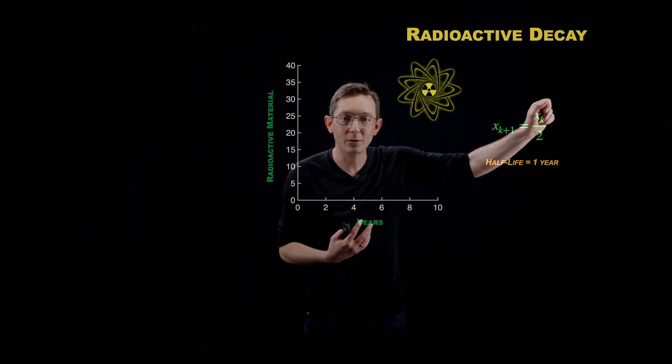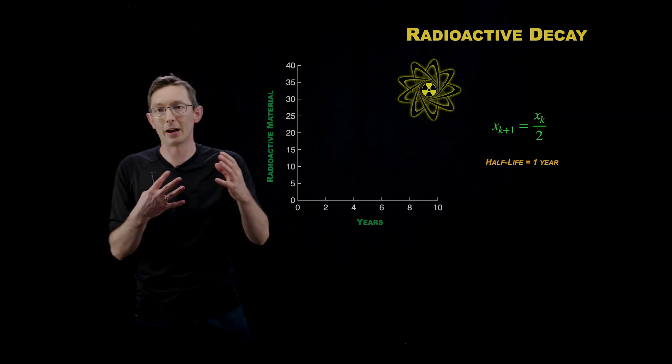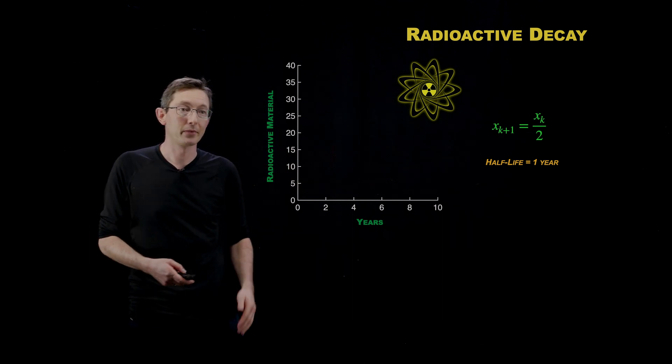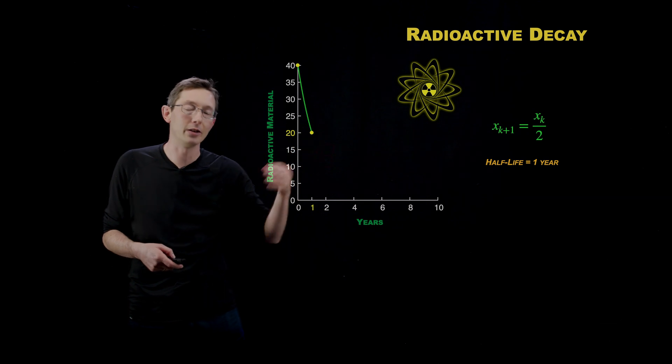Then from year to year, you would take your mass and divide it by two. And that would tell you how that radioactive material changes in time. So if you start with 40 grams of this material, the next year you'll have 20 grams.